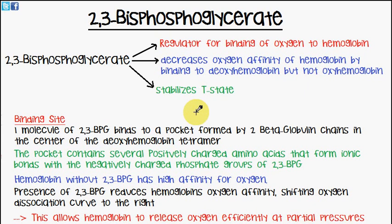Today's video is going to be on 2,3-bisphosphoglycerate. 2,3-bisphosphoglycerate is a regulator for binding of oxygen to hemoglobin. What it does is it decreases the oxygen affinity of hemoglobin by binding to deoxyhemoglobin, but not to oxyhemoglobin.